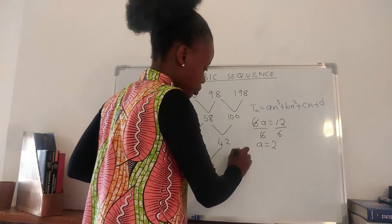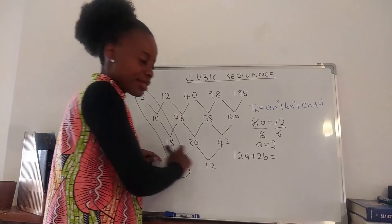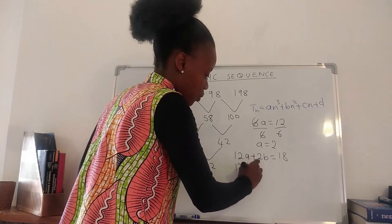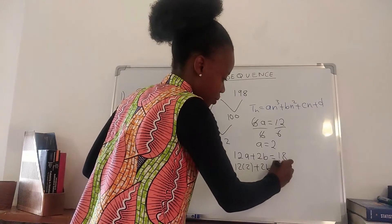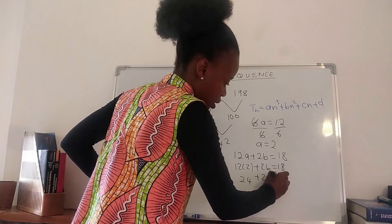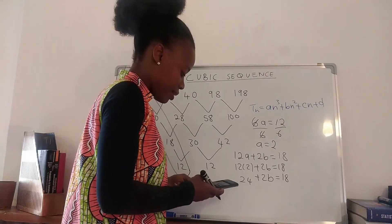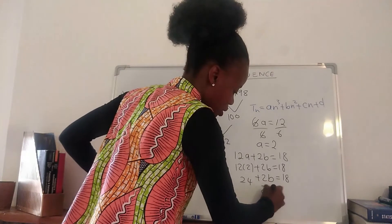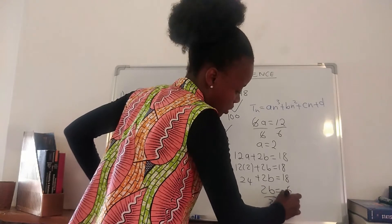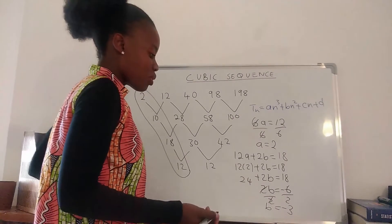To find b, we say 12a + 2b equals the first second difference, which is 18. Substituting a = 2 gives 24 + 2b = 18. Taking 24 to the other side gives 2b = −6, so dividing by 2, b = −3.